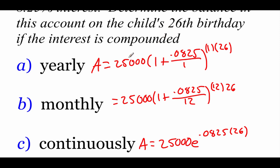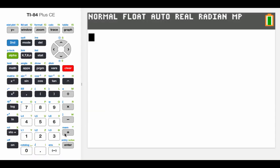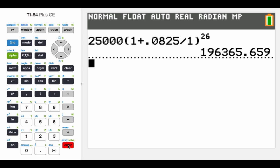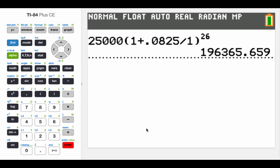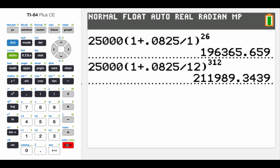Now I'm going to go into my calculator and type in all three of these things to get those three different answers. For the first one, compounding yearly, our power is just going to be 26 because 1 times 26 is 26. We get $196,365.66. Next one I'm doing is compounding monthly, so I'm going to change that N value to a 12. For the power, if we take 12 times 26, we get 312. Hit enter, and we get $211,989.34.